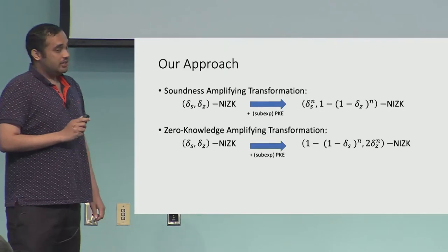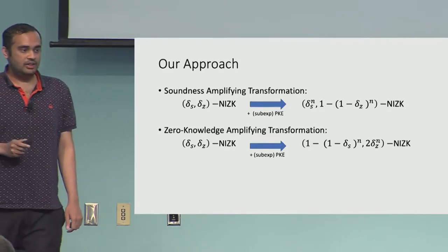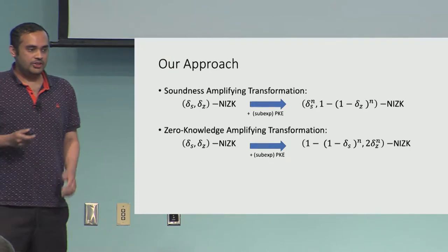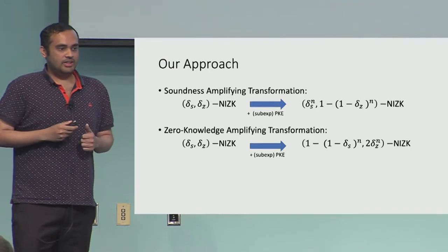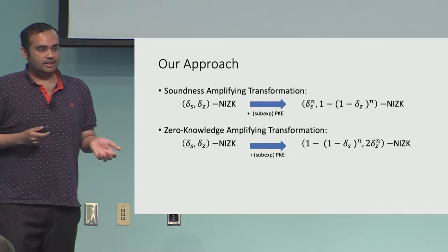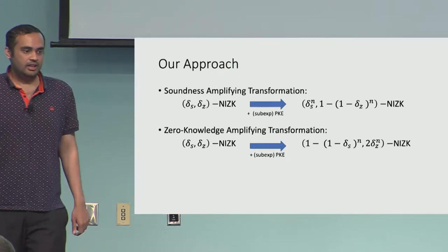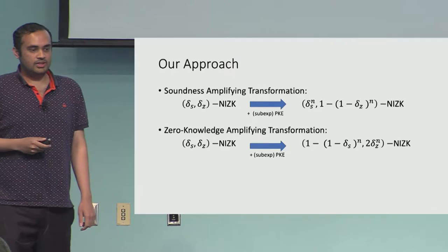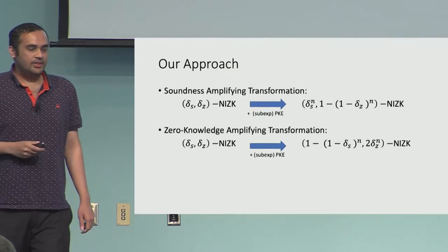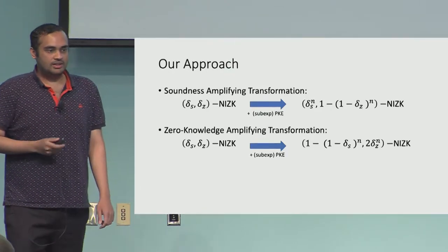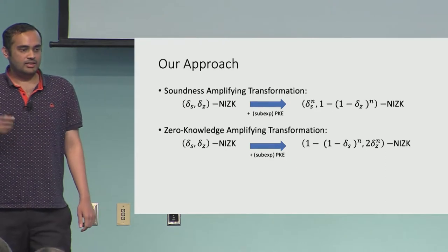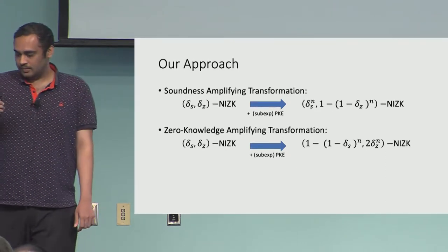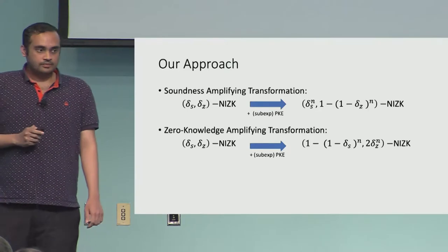The second transformation is the zero knowledge amplifying transformation. Its job is to improve the zero knowledge property. Analogous to soundness amplification, it improves zero knowledge from δZ to 2 times δZ^N. We also show it doesn't kill soundness completely — soundness goes from δS to 1 minus (1 minus δS)^N.